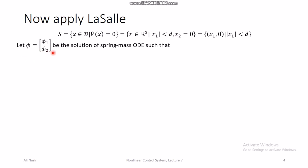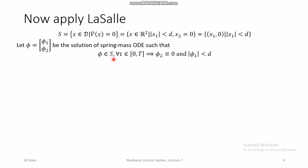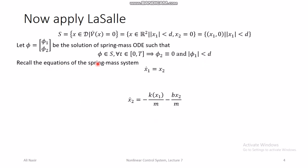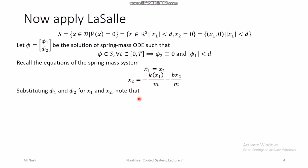Define φ to be the solution of the spring-mass ODE such that φ ∈ S for all time. If φ ∈ S, then φ₂ must be identically zero and φ₁ must be within ±d. Substituting into the spring-mass equations: since φ₂ = 0, we get φ̇₁ = φ₂ = 0, which means φ₁ has no rate of change, so φ₁ is some constant.